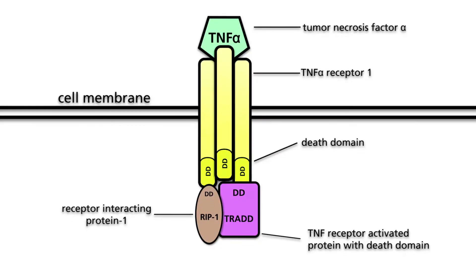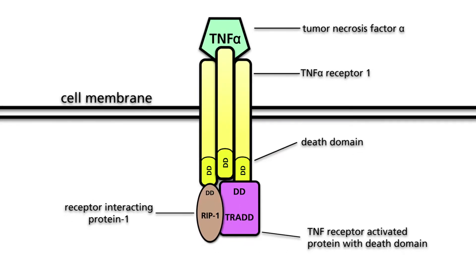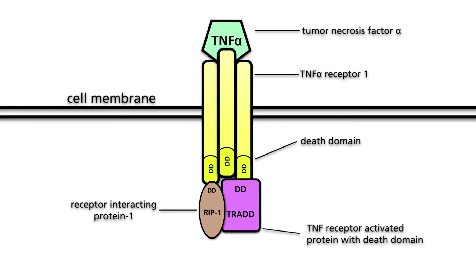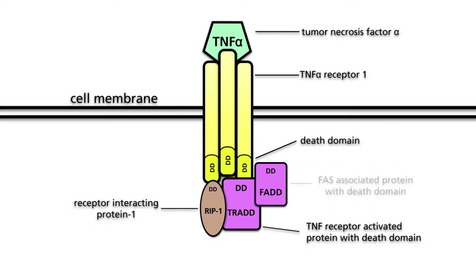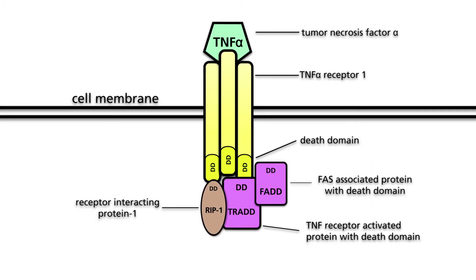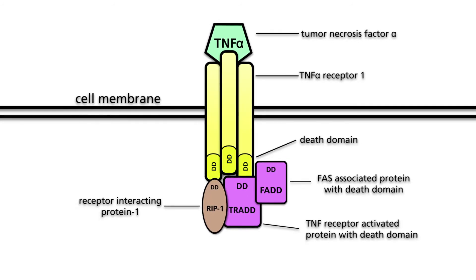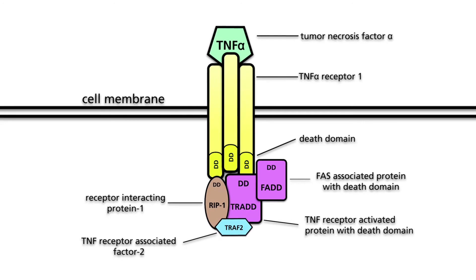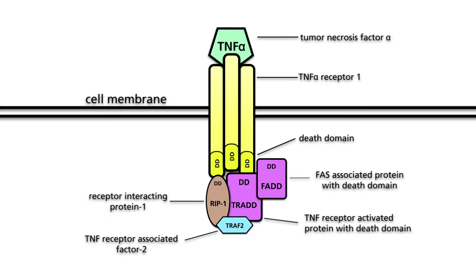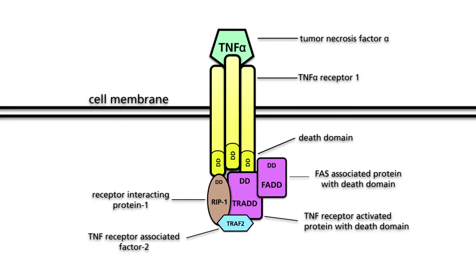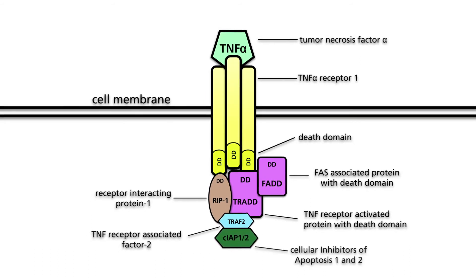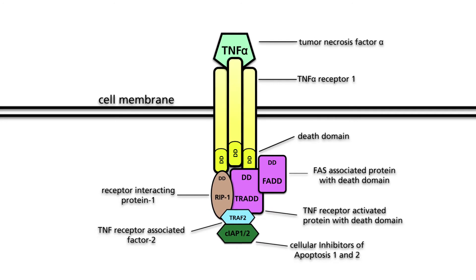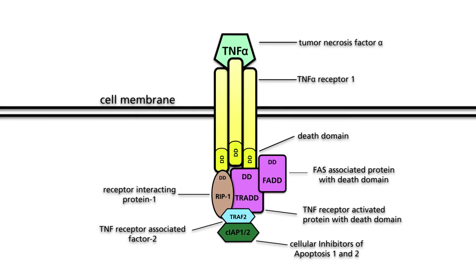TRADD provides a platform for the recruitment of an adapter protein named FAS receptor-associated death domain, abbreviated FADD. Next, TRAF2 and cellular inhibitors of apoptosis, or cIAP1 and cIAP2, are recruited to the complex. The exact composition of the complex has yet to be established.